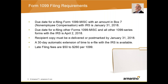The filing deadline is January 31st for recipient copies. The due date for e-filing is actually April 2nd, 2018, but individual paper files must be out by January 31st, 2018. As with the W-2s, there are penalties that range from $50 a form all the way up to $260 per form.